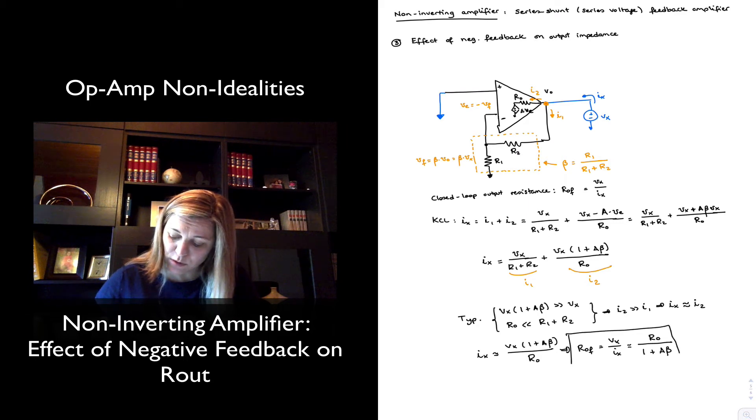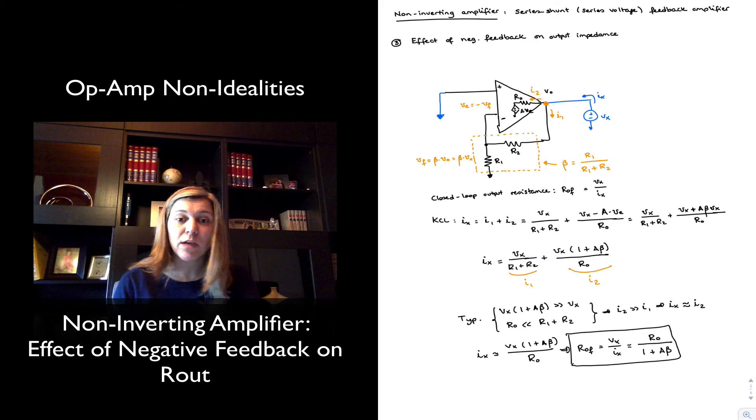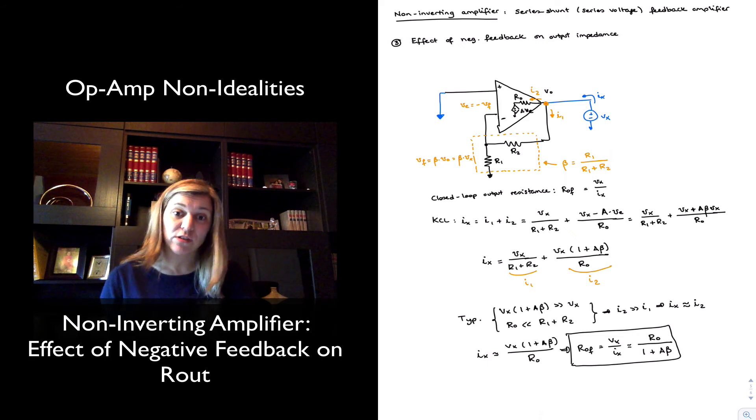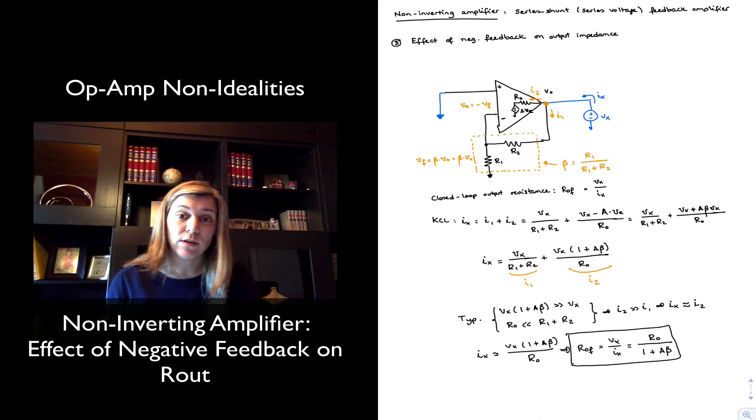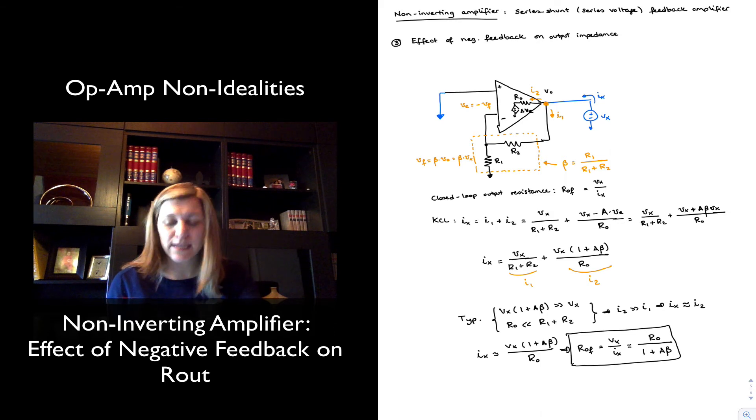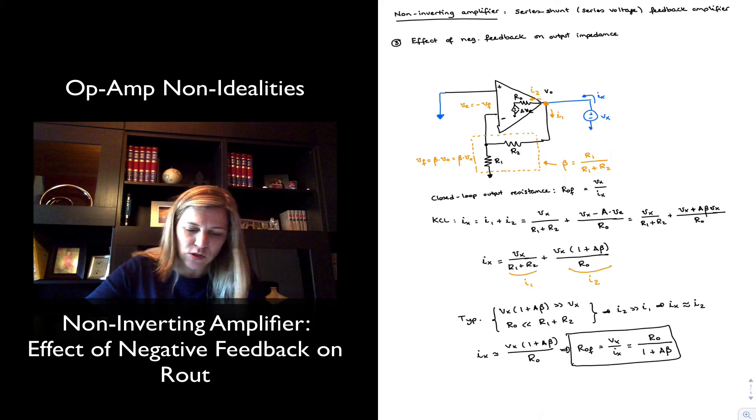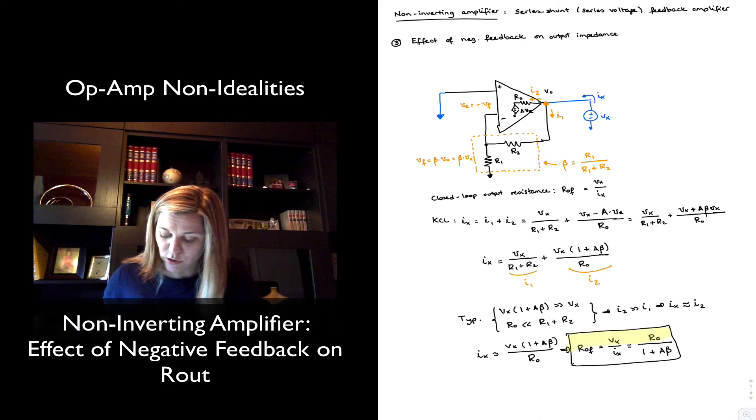Which is another important result, because it means that with this particular type of negative feedback, the series shunt feedback, my output resistance gets reduced by an amount that is equal to the amount of feedback, 1 plus A times beta. Or approximately, we can also approximate this as RO divided by the loop gain, A times beta. And so again, that's another important result.